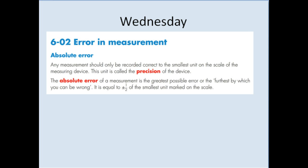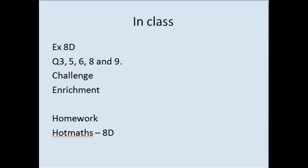A key term you need to know is absolute error. The absolute error of a measurement is the greatest possible error or the furthest by which we can be wrong, and it is equal to half the smallest unit marked. This will make more sense in the next slide.